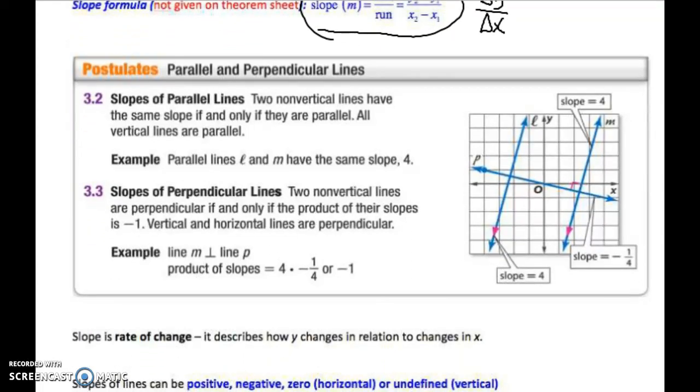Parallel and perpendicular lines, these are theorems, so they are on your theorem sheet to remind you. If you have parallel lines, then their slopes are going to be equal to each other. So two non-vertical lines have the same slope if and only if they are parallel. All vertical lines are parallel to each other. Parallel lines L and M have slope of 4, so here's L and here's M, they have the same slope. We can use these symbols right here to indicate parallel lines. It looks kind of like a V, not an arrow key, but an open V, or you can do a closed V, but it's a little bit different than your arrow. That indicates parallel lines.